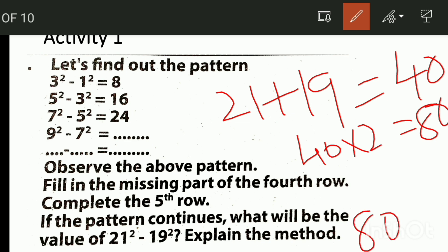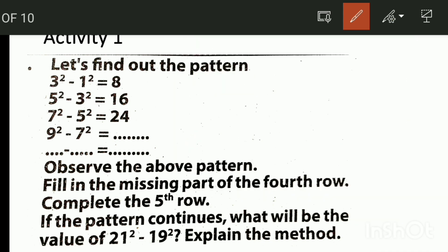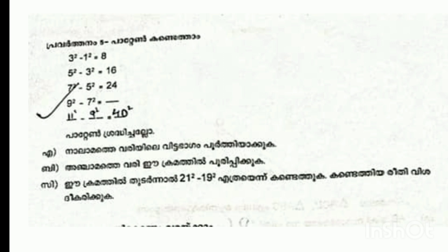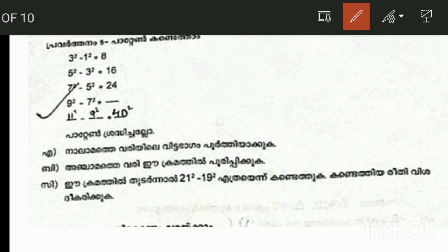How do we do it? A plus B into 2. The method is: 3 plus 1 is 4, 4 into 2 is 8. Now let's explain the method — it's very easy. We have to use this technique in this pattern. 9 square minus 7 square equals 32.